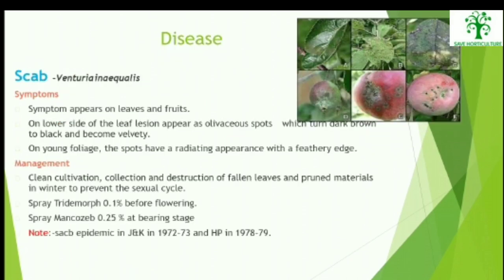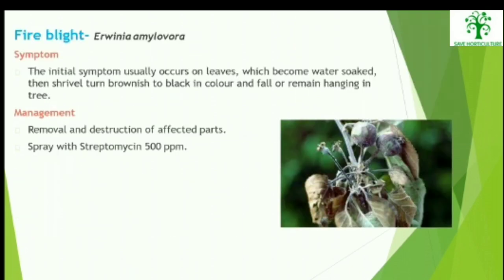Scab: Symptoms appear on leaves and fruits. On the lower side of the leaf, lesions appear as olivaceous spots which turn dark brown to black and become velvety. On young foliage, the spots have a radiating appearance with a feathery edge. Management includes clean cultivation, collection and destruction of fallen leaves and pruned materials in winter, so as to prevent the sexual cycle.